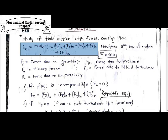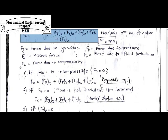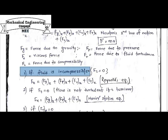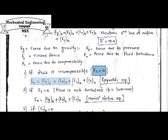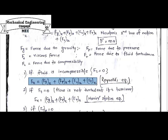Taking this equation further — if the fluid is incompressible, then the compressibility force Fc equals zero. The resultant equation becomes Fx = Fg(x) + Fp(x) + Fv(x) + Ft(x), which includes the gravitational, pressure, viscous, and turbulence force components. This equation is known as the Reynolds equation.